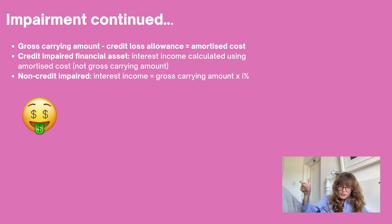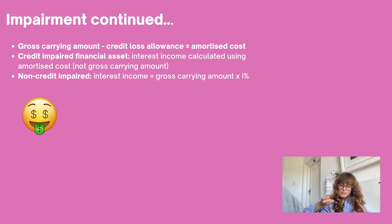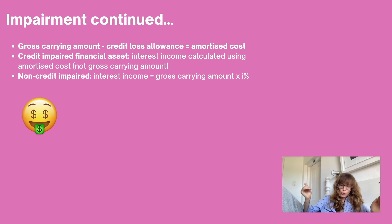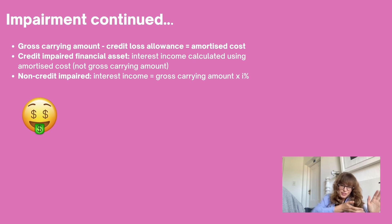The credit loss allowance account is a negative asset, so it reduces the gross carrying amount to give you your amortized cost. The gross carrying amount is the carrying amount before taking into account any impairment losses. This becomes relevant when something is credit impaired: if credit impaired, you calculate interest income using amortized cost, taking impairment losses into account. If not credit impaired — i.e., no objective evidence of default — you use the gross carrying amount to calculate interest income.